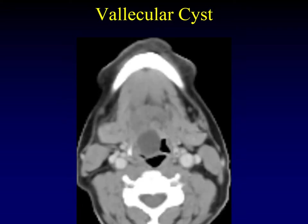A vallecular cyst is a mucus retention cyst that arises within the vallecula — when it occurs in this location, we give it a special name. Here is the epiglottis, the base of tongue, and the hyoepiglottic ligament that tethers the epiglottis to the base of tongue and divides the vallecula into two halves. You can see this half is almost completely filled by a uniform-density cystic mass — it's almost certainly just a vallecular cyst. These are benign.